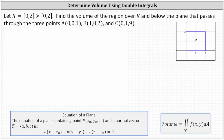Let the region R be the closed interval from zero to two by the closed interval from zero to two. When the region R is given in this way, the first interval is for X and the second interval is for Y. This indicates the region R is the square region shown here in the XY plane — a two by two square.